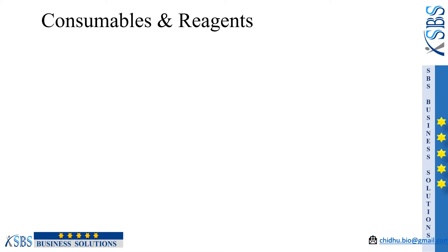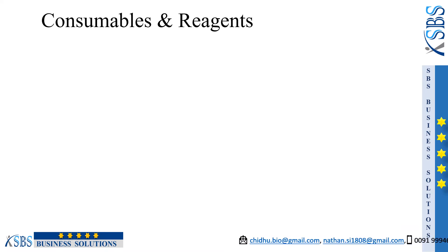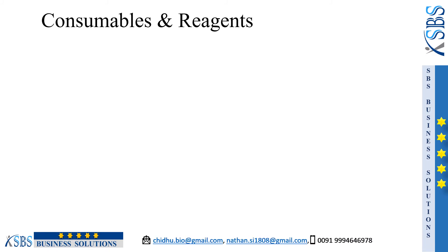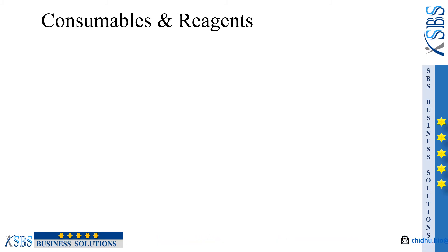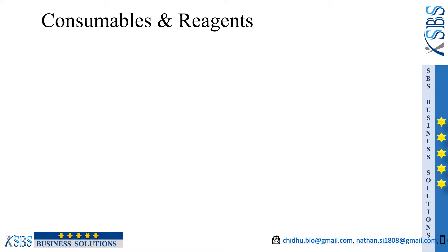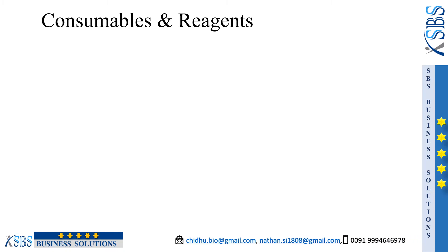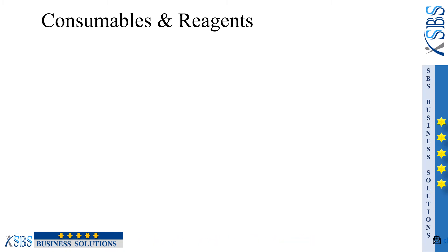The next one is consumables and reagents. This is going to be a recurring cost. Equipment is a fixed cost, and consumables and personnel are going to be recurring costs.